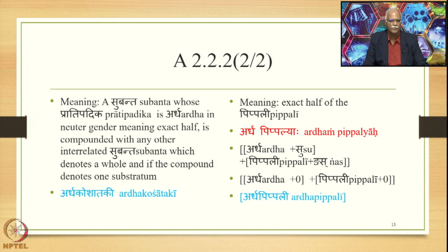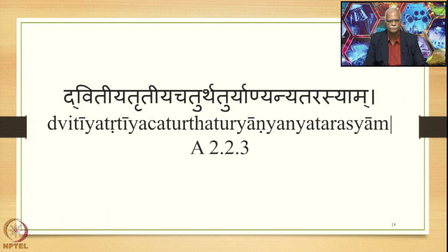Similarly, we can also have Ardha Koshataki as another output. The next Sutra is Dvitiyya Trutiyya Chaturtha Turyanyanyatarasyam (2.2.3), which has two Padas: Dvitiyya Trutiyya Chaturtha Turyani and Anyatarasyam.